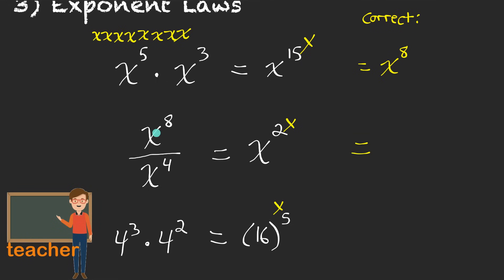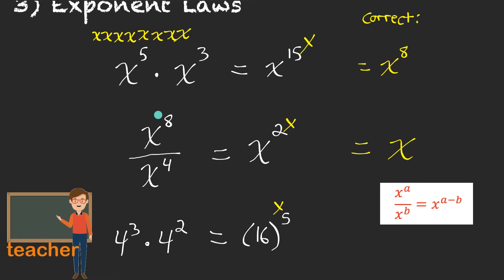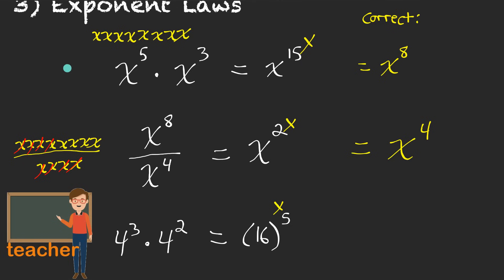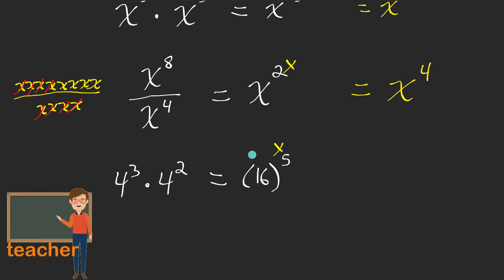For the second one — dividing powers with the same base — yes, you keep the same base, you did that well. But we have to subtract the exponents, not divide them. 8 minus 4 is 4. And if you want to see why, write it out: eight factors of x divided by four factors of x — four pairs will cancel out, and we have four factors of x left — x to the 4. The last one was so close: multiplying powers with the same base, yes, you do add the exponents, so the exponent is 5. But you forgot — you keep the base the same. It should be 4 to the power of 5. You don't multiply the bases together. You keep the base the same and add the exponents.